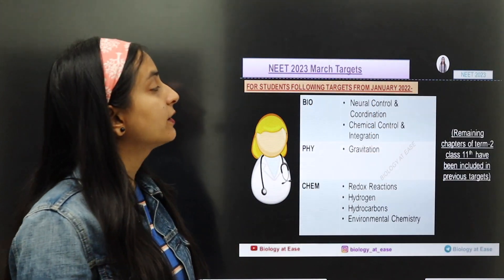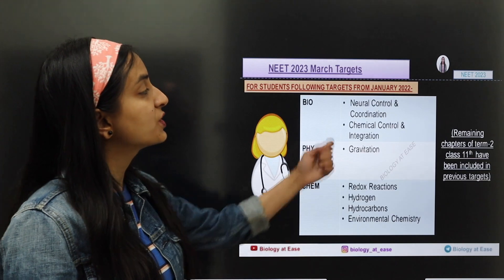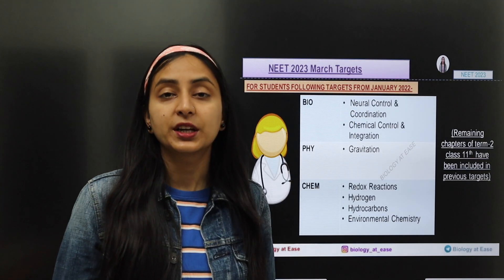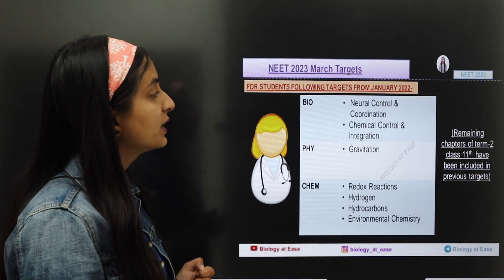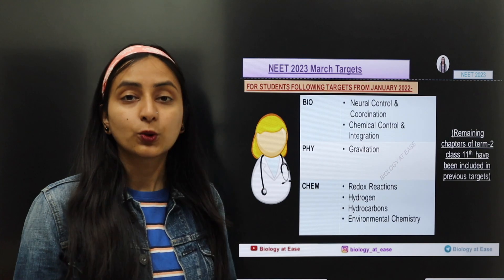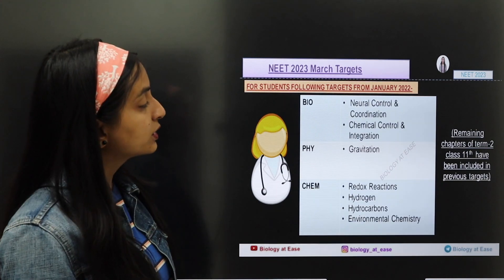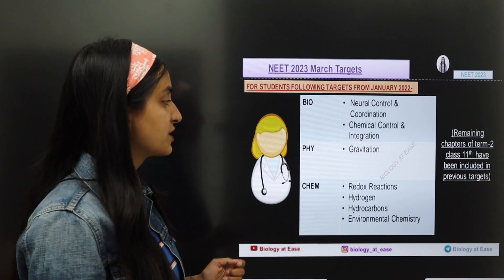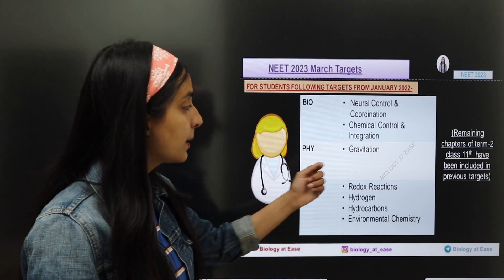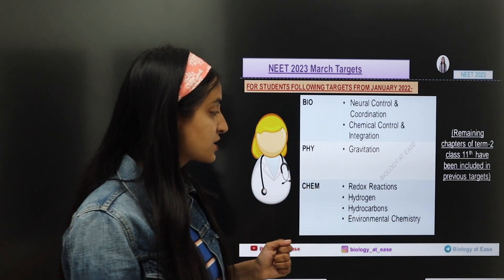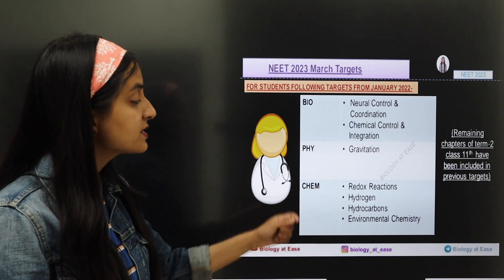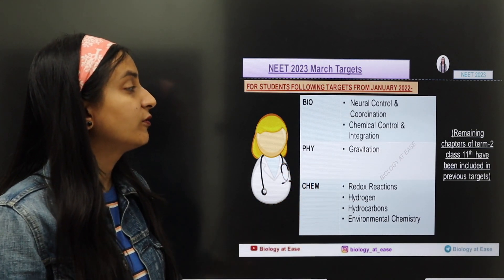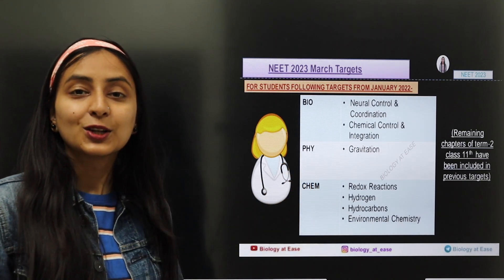In the third category, there are many children who are following my targets from January 2022. In Biology, you will do Neural Control and Coordination and Chemical Coordination and Integration. In Physics, you will do Gravitation. In Chemistry, you will do Redox Reactions, Hydrocarbons, Hydrogen, and Environmental Chemistry.